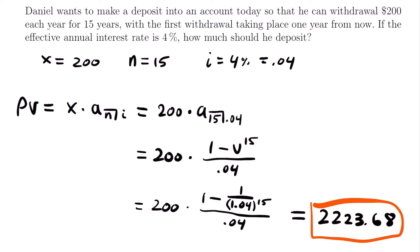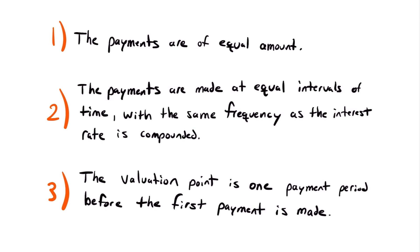Before concluding, there are three requirements for using this formula. First, the payments must be of equal amount — in all our examples, the withdrawal was the same every year: $100 or $200 throughout the entire period. Second, payments must be made at equal intervals of time with the same frequency as the interest rate is compounded. In our examples, withdrawals were made once per year, and we also had an effective annual interest rate, so the intervals matched.